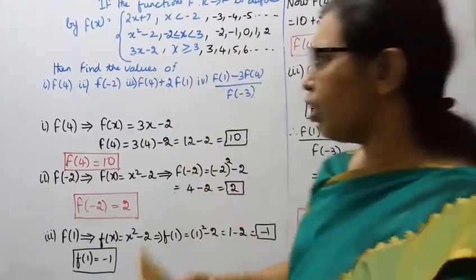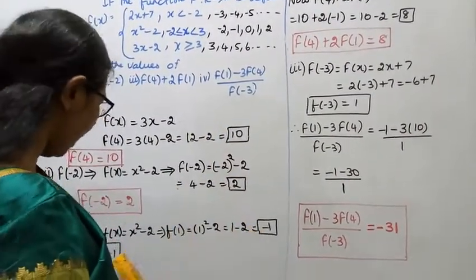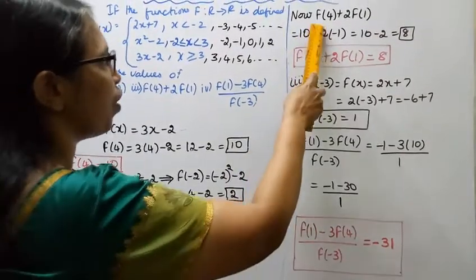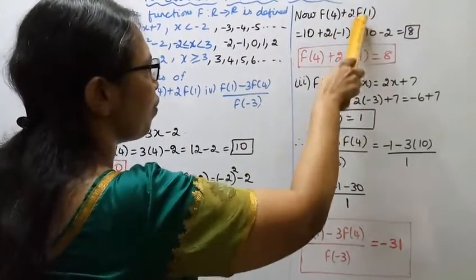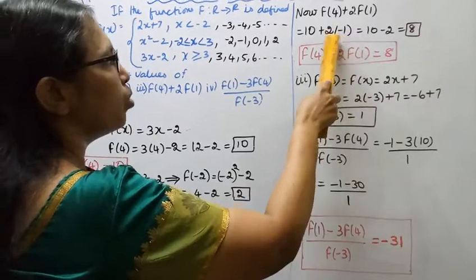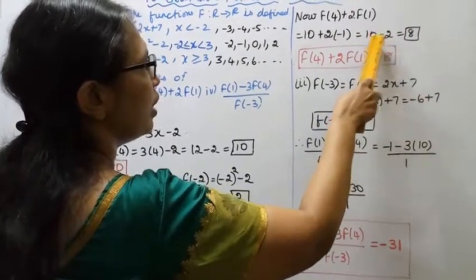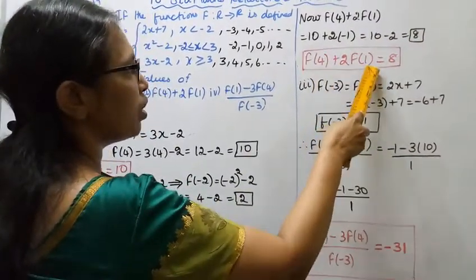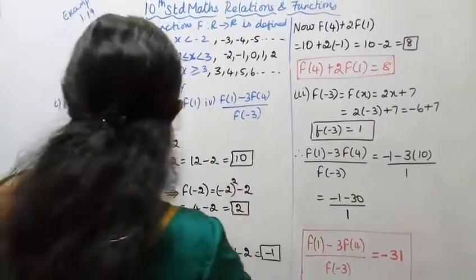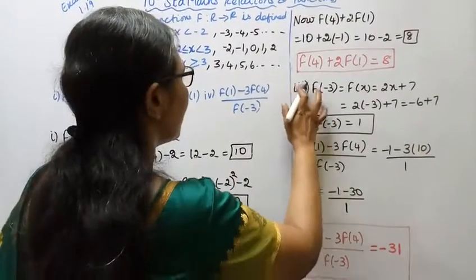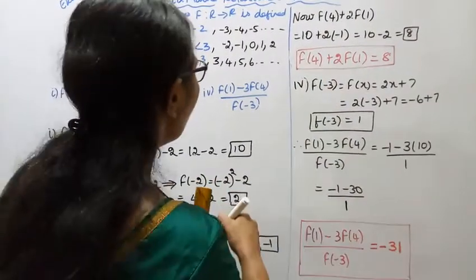f(4) plus 2 into f(1): f(4) is 10, f(1) is minus 1. So 10 plus 2 into minus 1 equals 10 plus minus 2, which equals 10 minus 2 equals 8. So f(4) plus 2 into f(1) equals 8.